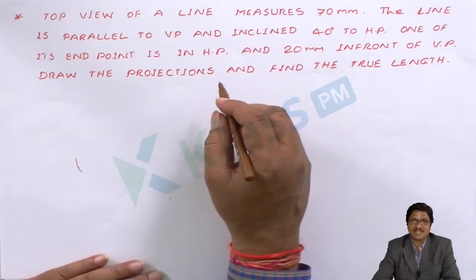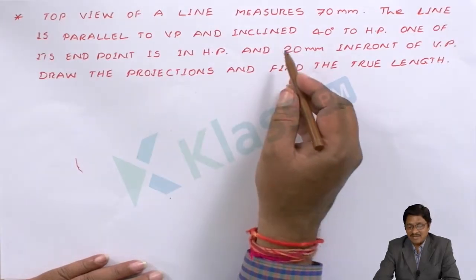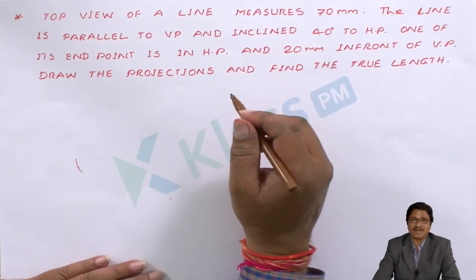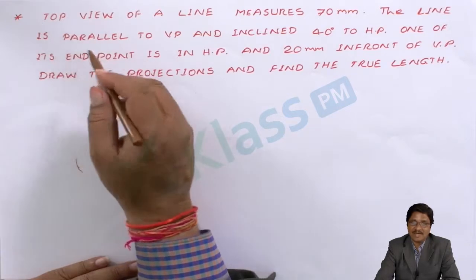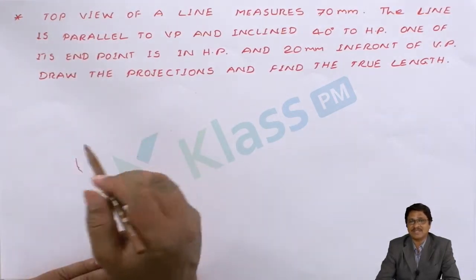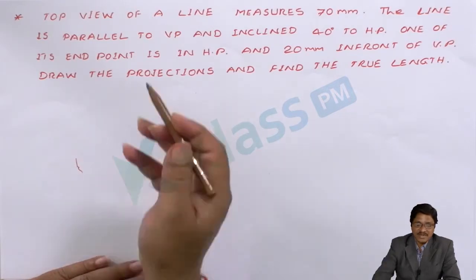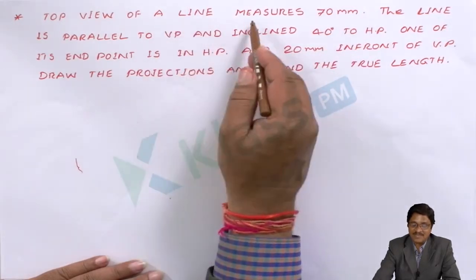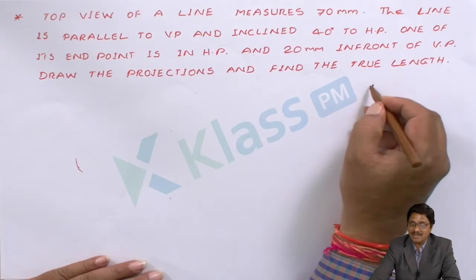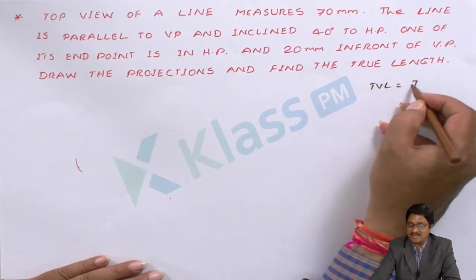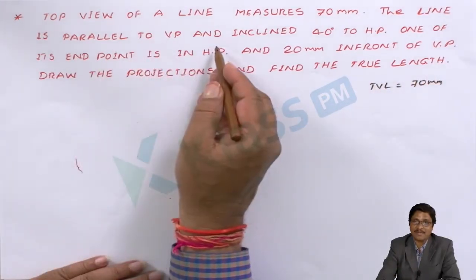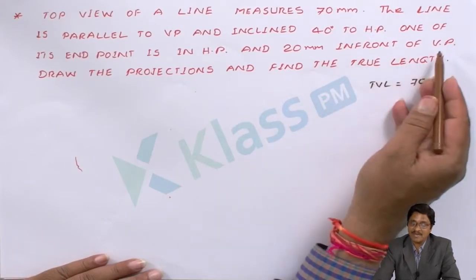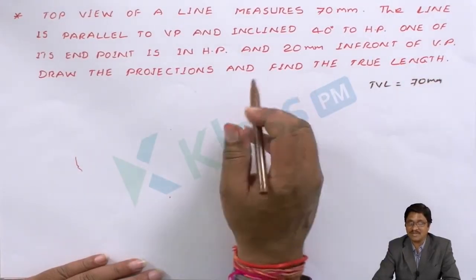By reading the problem it seems a little hard, but once you take all the information given together with your known concepts, you can easily understand and find the solution. The problem states: top view of a line measures 70 mm. The line is parallel to VP and inclined 40 degrees to HP. One of its endpoints is in HP and 20 mm in front of VP. Draw the projections and find the true length.